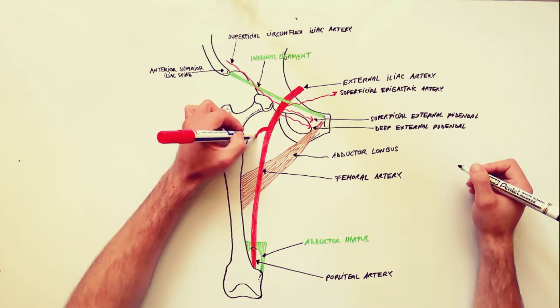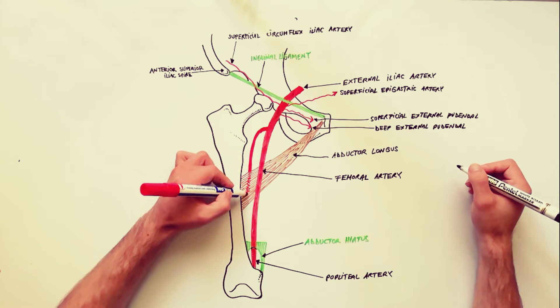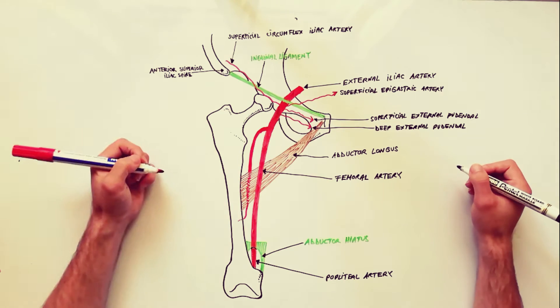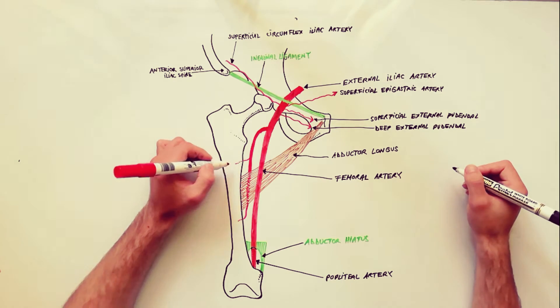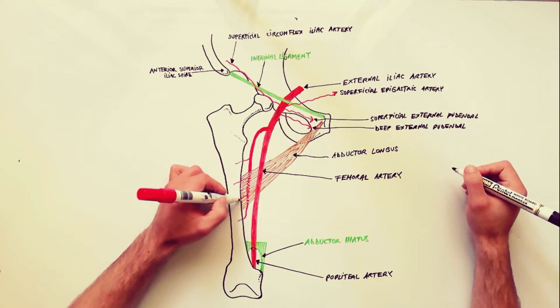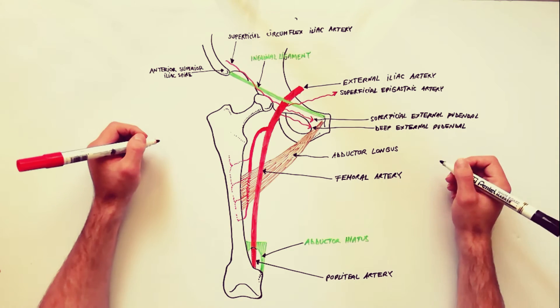The biggest branch of the femoral artery is profunda femoris, also called the deep femoral artery. This artery arises from the lateral side of the femoral artery, about 4 cm below the inguinal ligament.